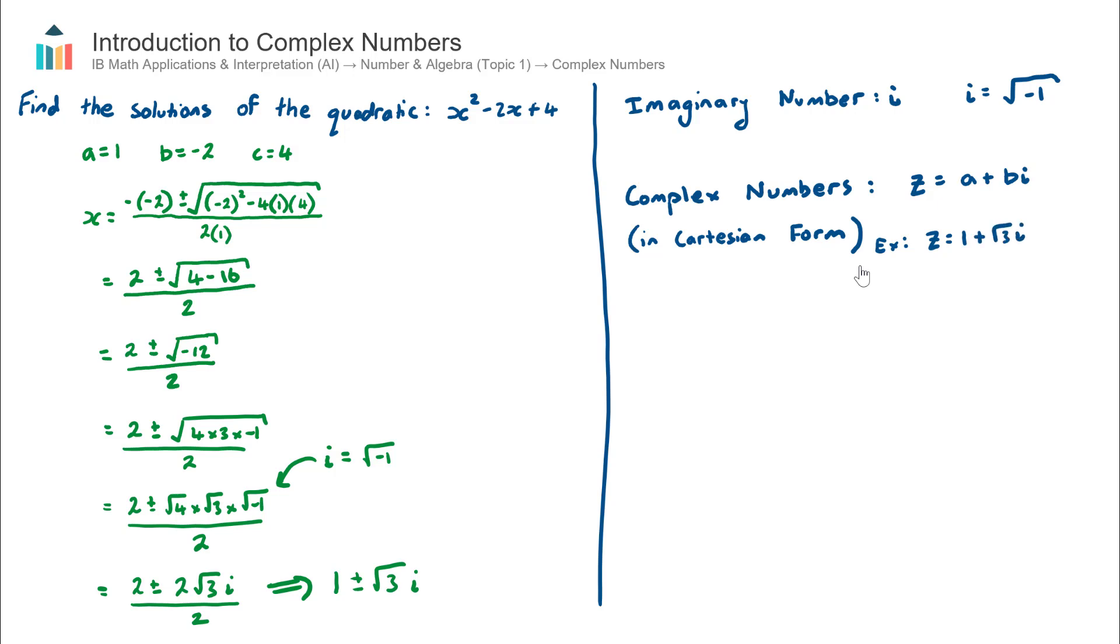Now this complex number here has both real components - which is the 1, there's no i attached to the 1 - and also an imaginary component which is the √3i.